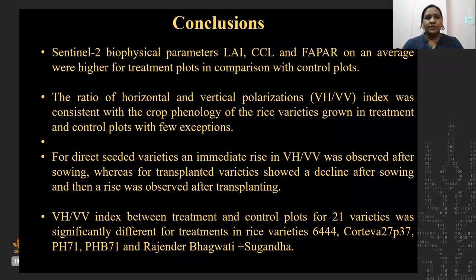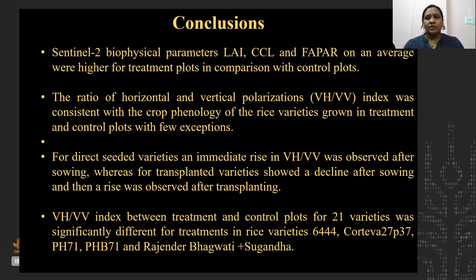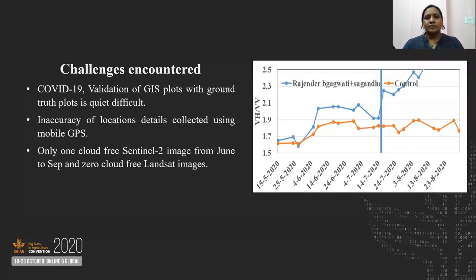The preliminary results show that biophysical variables were higher for treatment plots compared to control, and the VH/VV index was consistent with the crop phenology of the rice varieties. The trend of VH/VV was different for direct-seeded and transplanted varieties, and the VH/VV index was significant for 5 out of 21 varieties. During this period, challenges included COVID-19 as the biggest challenge for collection of geo-coordinates and validation, mobile GPS inaccuracies, and no spectral data available due to cloud cover. In coming seasons, we hope to present much more improved results. Thank you so much.